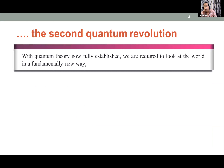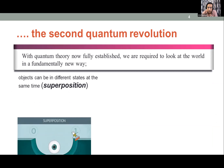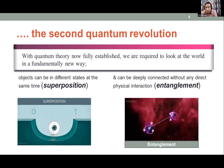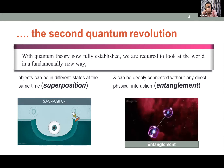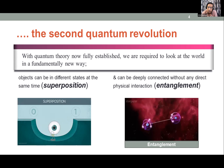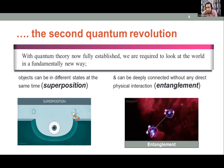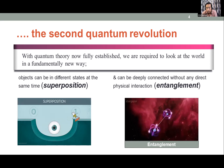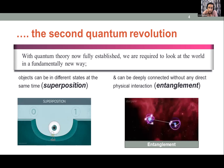Now we're talking about the second quantum revolution. With quantum theory fully established, we are required to look at the world in a fundamentally new way. Objects can be in different states at the same time — we call this superposition. Two things can be deeply connected without any direct physical interaction — that is entanglement. Our new technologies are based on these two quantum phenomena.